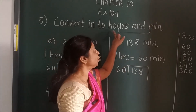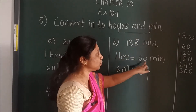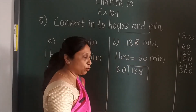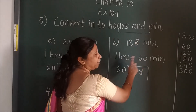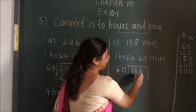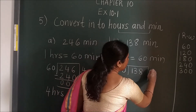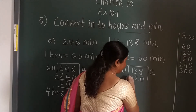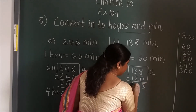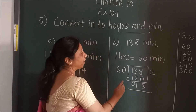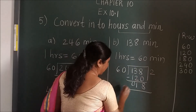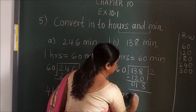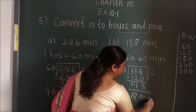Here also, first write the relation of hours and minutes: 1 hour is equal to 60 minutes. Since you have to find two things, you divide. Write the given number and divide by 60. Table of 60: 2 times 60 is 120. When you subtract, you get the answer. When you write the final answer: 2 — the quotient — will become hours, and 18 will be your minutes, that is the remainder.